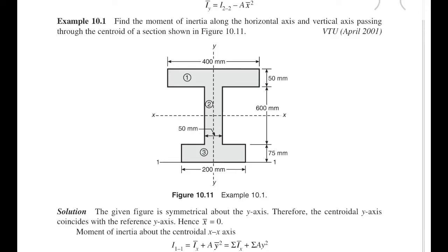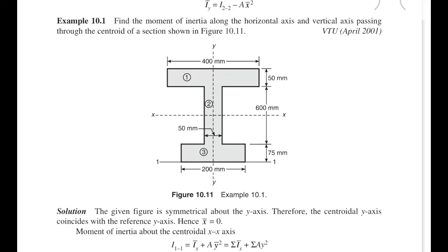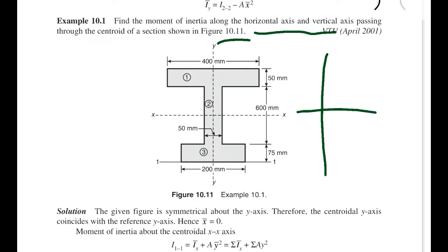Hello friends, welcome to Civil Engineering Exam. Today we are going to see a problem related to engineering mechanics in the topic of moment of inertia. The problem is to find the moment of inertia about the horizontal axis and vertical axis passing through the centroid of the section shown in the figure. The figure is an I-section, which is symmetrical about the y-axis but non-symmetrical about the x-axis.